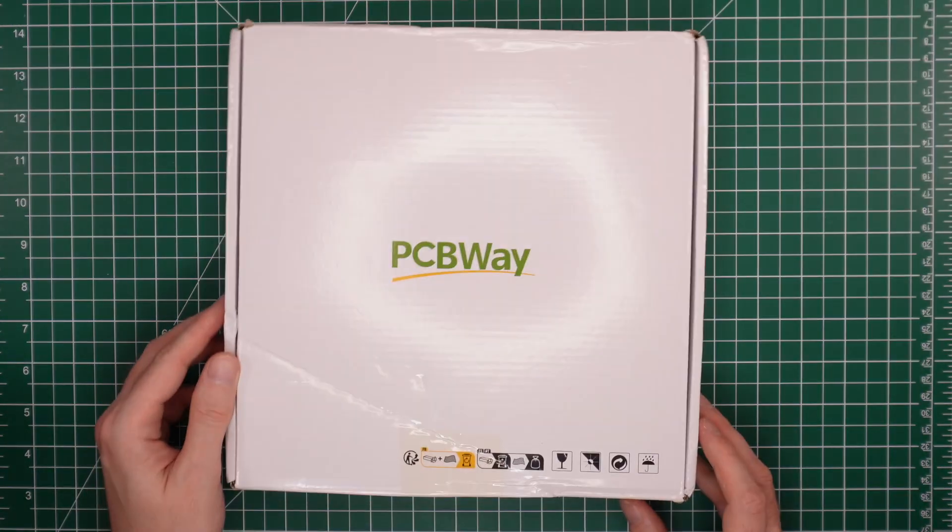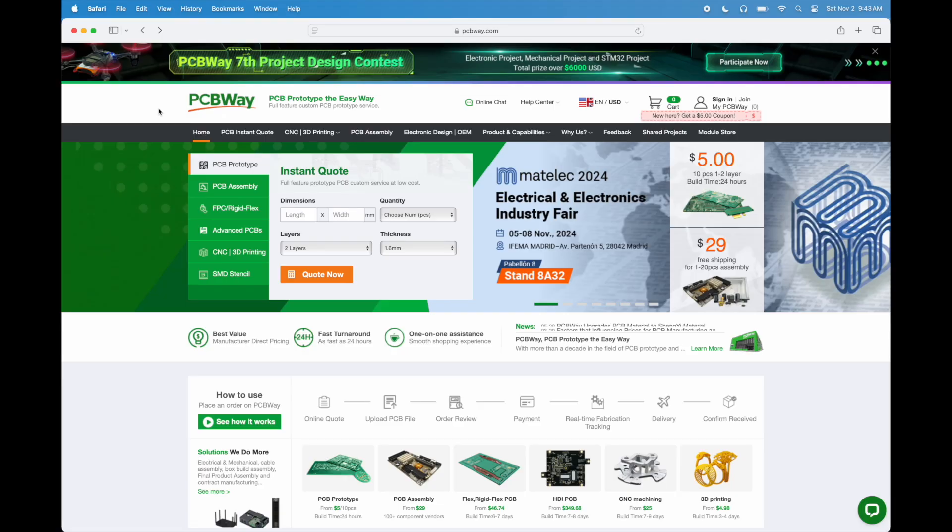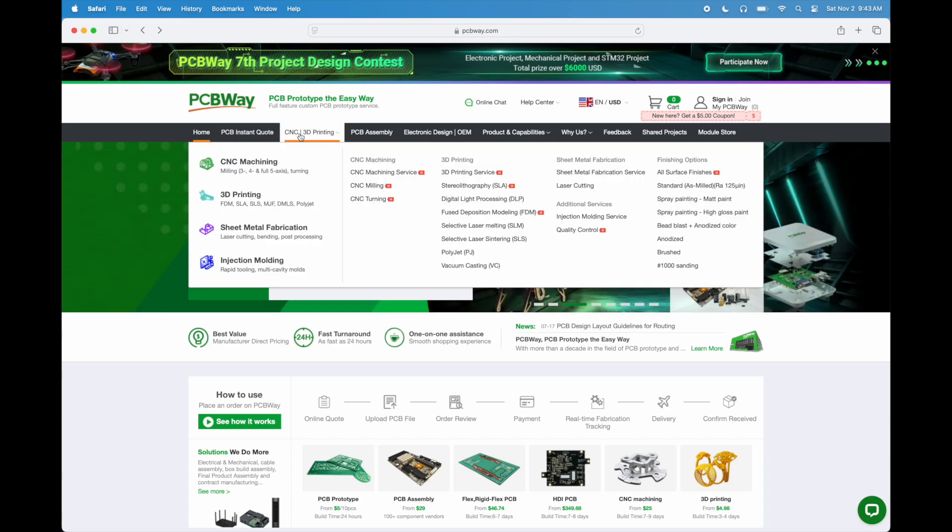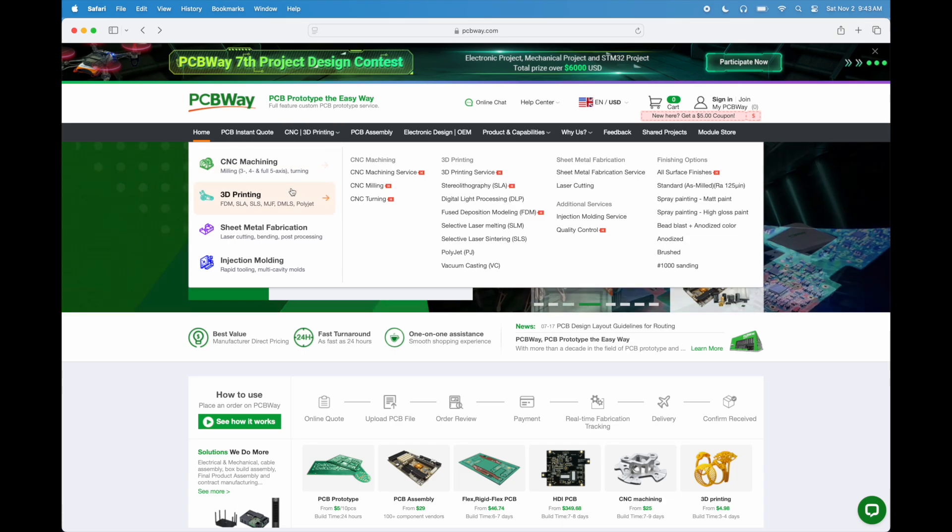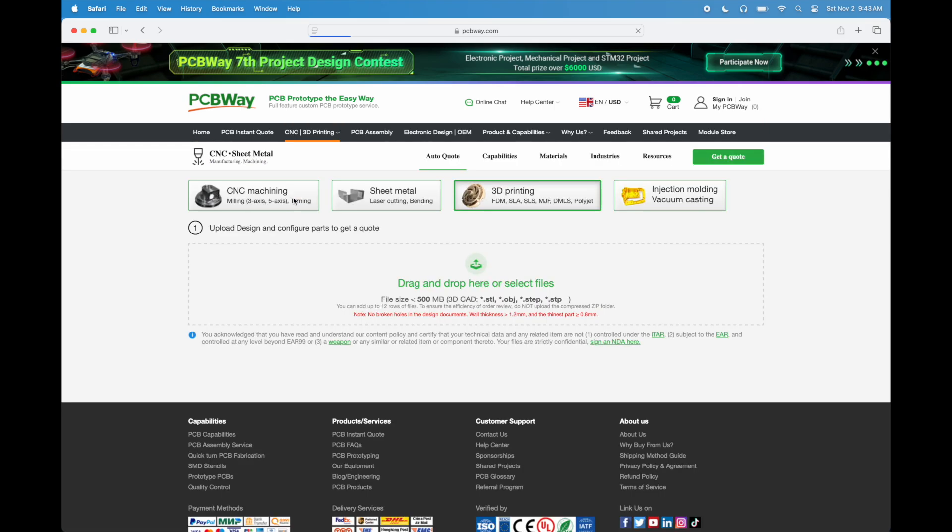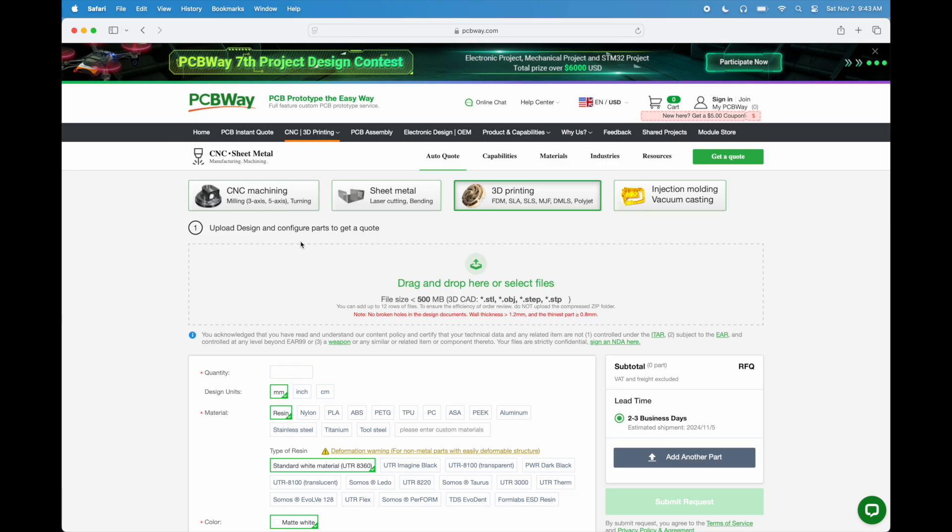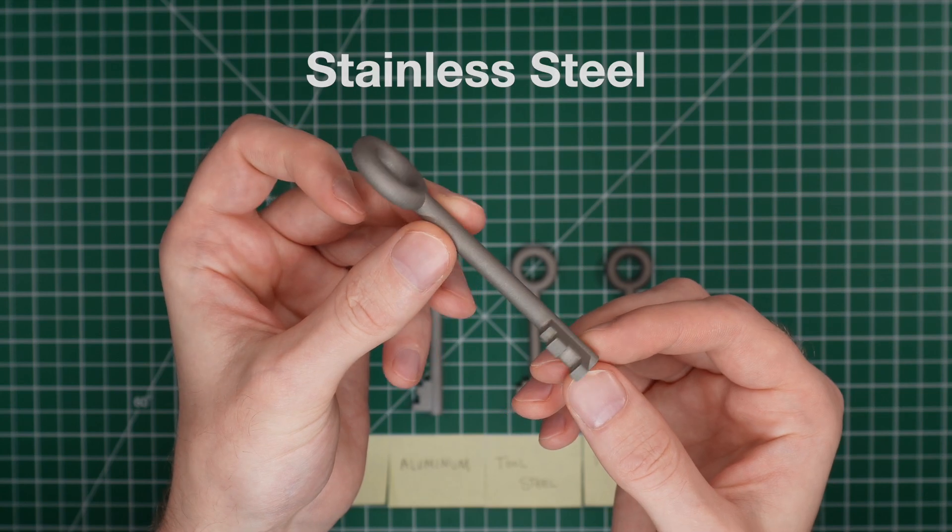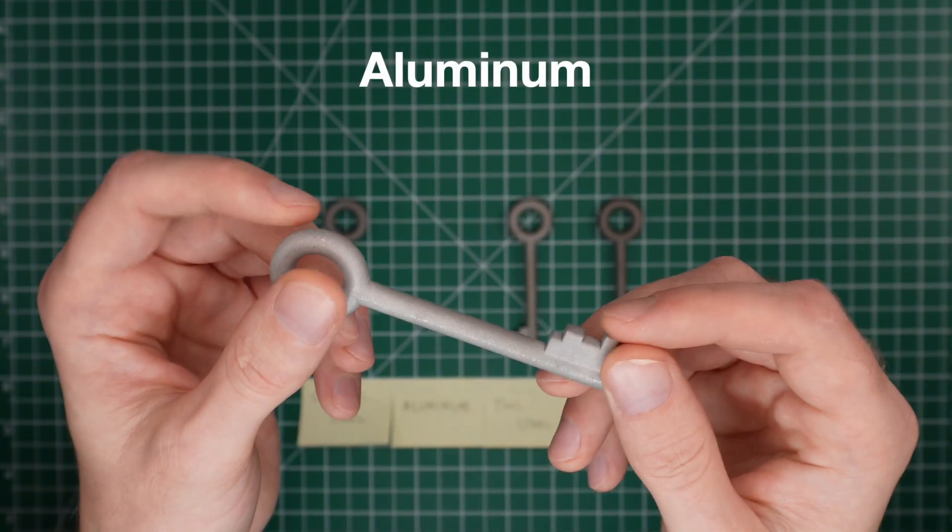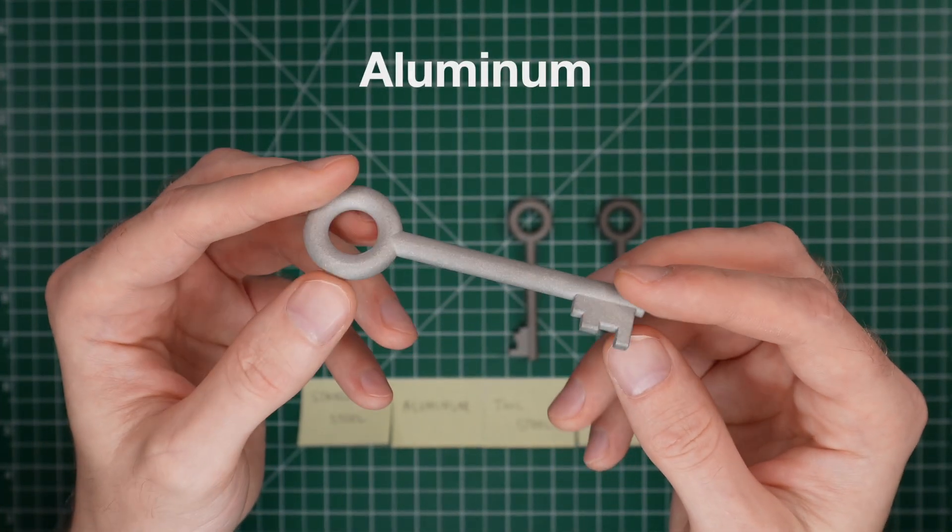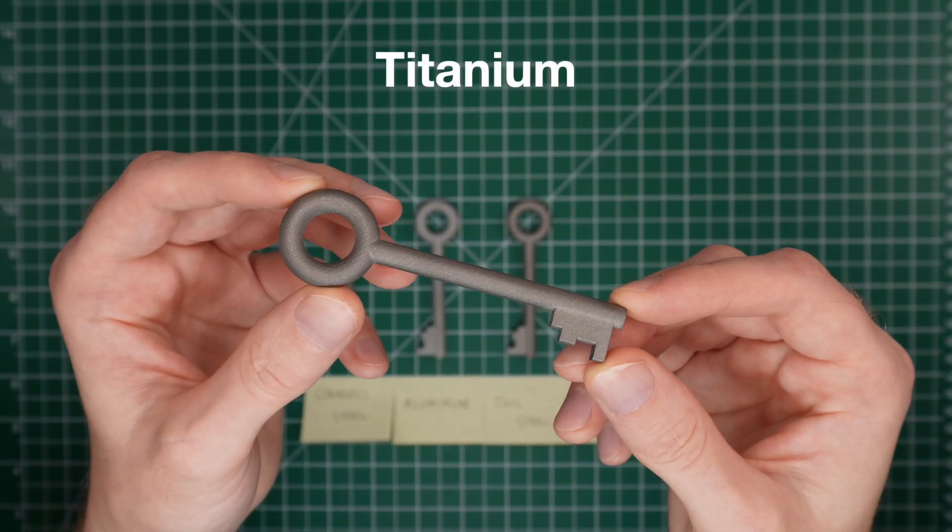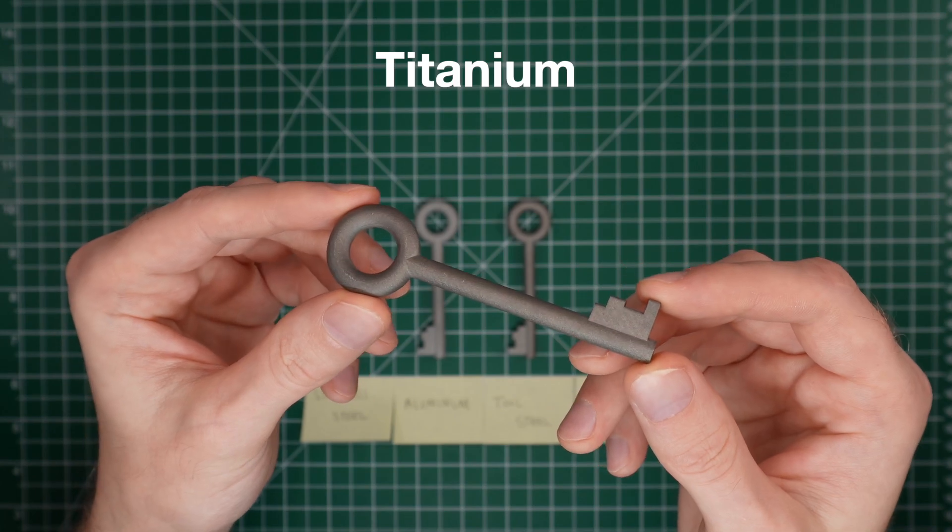Speaking of keys, I would like to thank the sponsor of today's video, PCBWay. PCBWay offers every service you could ever need for your projects, from custom PCBs to CNC services to 3D printing any material you can ever imagine. PCBWay is the best place to help take your projects to another level. For this project, I decided to 3D print a few keys out of metal, and if you saw my last video, you'll know that I already have stainless steel and aluminum keys, so I decided to try out tool steel and titanium, which came out great. Thank you to PCBWay for supporting this video.